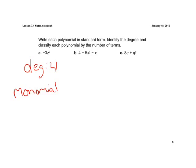All right, B — write it in standard form. Remember, exponents go from greatest to least, so we're going to put 5x squared first, and then minus x, and plus 4. Make sure we keep those negatives with our variables — that's going to be a little tricky. Identify the degree — squared is our highest exponent, so our degree is going to be 2.